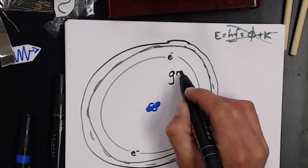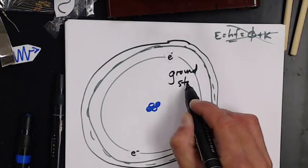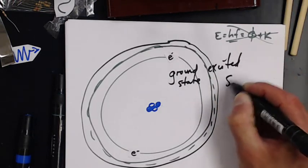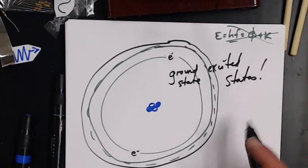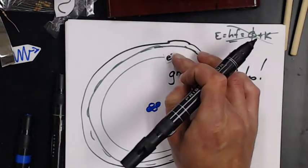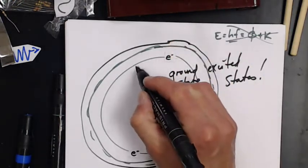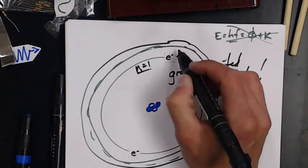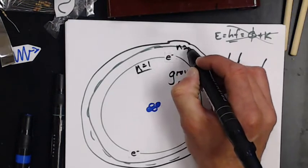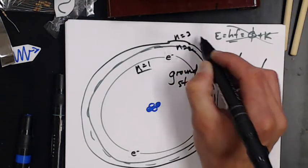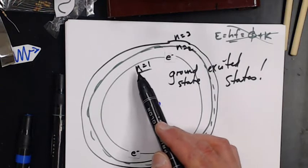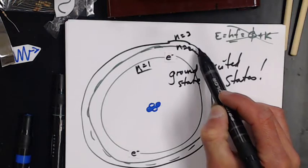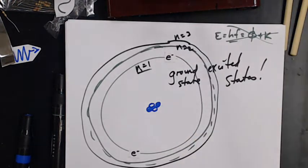This is as far as it can fall, so this is called the ground state, and then these are excited states. They have numbers associated with them, so the ground state is n equals one. The next one up would be n equals two, and this one would be n equals three. The first excited state is n equals two, the second excited state is n equals three.